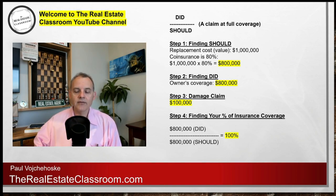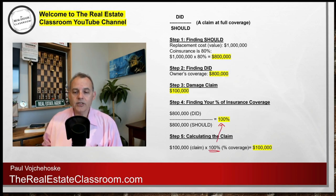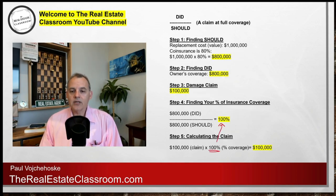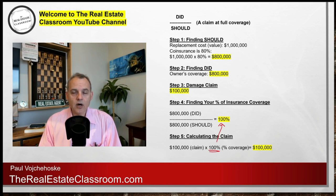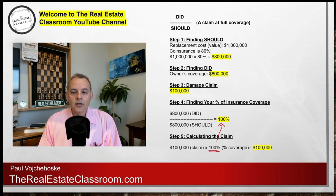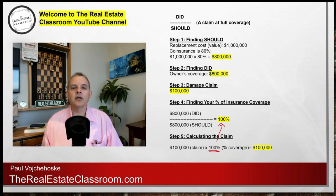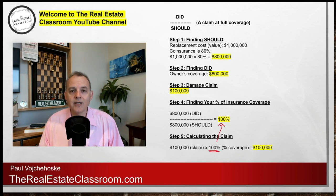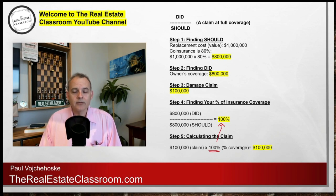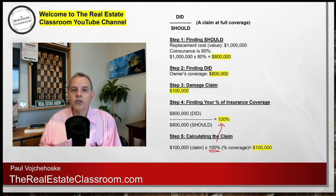Step five — the final step — we put in our damages. We take $100,000, which is the amount of our claim, times 100%, which is our coinsurance coverage from step four. That means the coinsurance carrier is going to give us a check for $100,000 — they are going to insure the entire $100,000 claim. Pretty simple when it's 100% across the board; the owner did their part. But what happens when the owner has less coverage than they should have had?